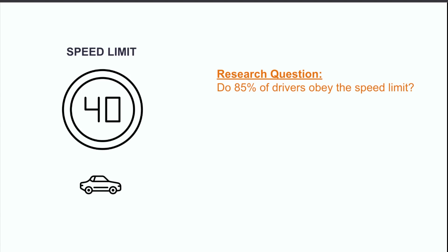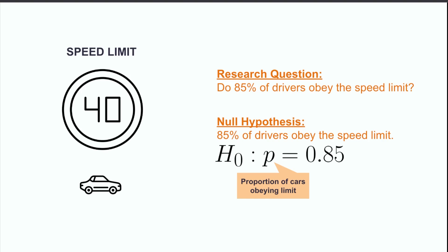In our speed limit example, our research question is whether 85% of the drivers still obey the speed limit. Our null hypothesis in writing would be that, yes, 85% of drivers go under the speed limit. Mathematically, we would write the null hypothesis as H sub 0 colon P, which stands for the proportion of drivers who go to the speed limit, equal to 0.85.